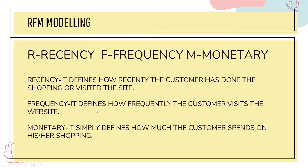The second factor is Frequency — how many times a customer visits a website within a given duration, even if they don't buy anything but just browse products. For example, if we consider a week, a customer who visits seven times is more connected or loyal to the website than one who visits only three times. This factor is used for grouping customers.